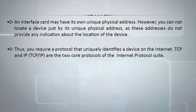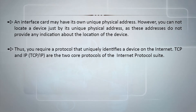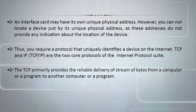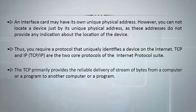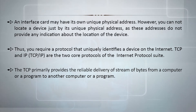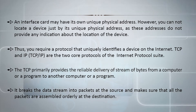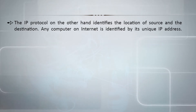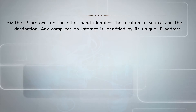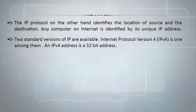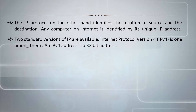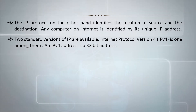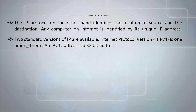TCP and IP are the two core protocols of the internet protocol suite. TCP primarily provides reliable delivery of a stream of bytes from one computer or program to another. It breaks the data stream into packets at the source and makes sure that all the packets are assembled in the correct order at the destination. The IP protocol, on the other hand, identifies the location of the source and destination. Any computer on the internet is identified by its unique IP address. Two standard versions of internet protocol are available; Internet Protocol version 4, or IPv4, is one among them.